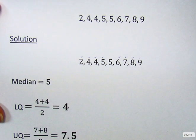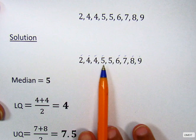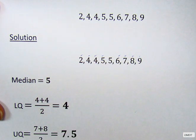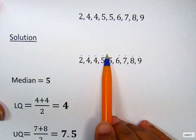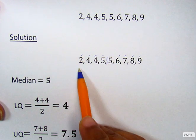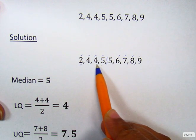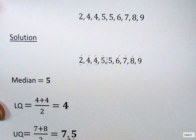Next, we have to find the low quartile. The low quartile will be the median for the lower half of the marks. So the lower half will be from here. We find the middle. We have two middle marks. So we add these two and divide by two. We have four plus four divided by two gives four. So our low quartile is four.